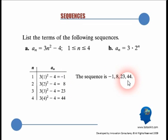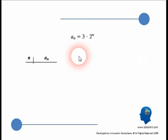Now we'll do the second part of the problem, where a sub n is equal to 3 times 2 to the nth power. Now there are no constraints on n. In the previous problem, you saw n fell between 4 and 1. Here there are no constraints, no limitations on n.